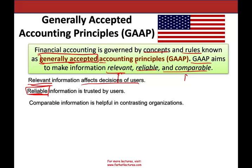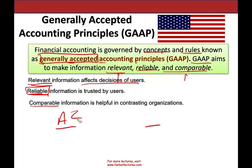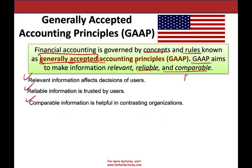The information also has to be comparable. Comparable means when you look at the information, you can take the data about company A and compare it to company B to assess their relative performance. Why? Because we are all using GAAP — the same rules. Therefore, the information has to be relevant, reliable, and comparable. These are not the only three characteristics, but for a financial accounting course, that's all we need to know.